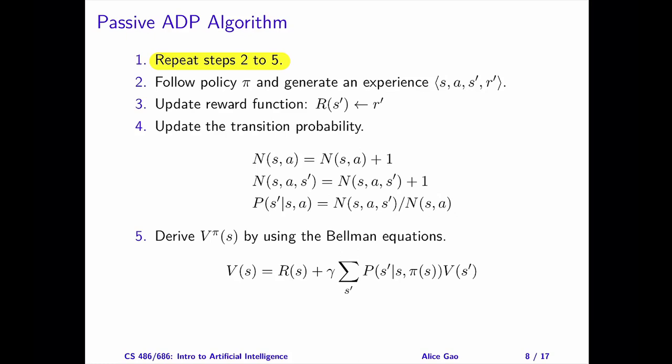This causes the agent to transition to state S prime and receive a reward R prime. The experience consists of S, A, S prime, and R prime. The agent can use this experience to update its estimates of the utility values.